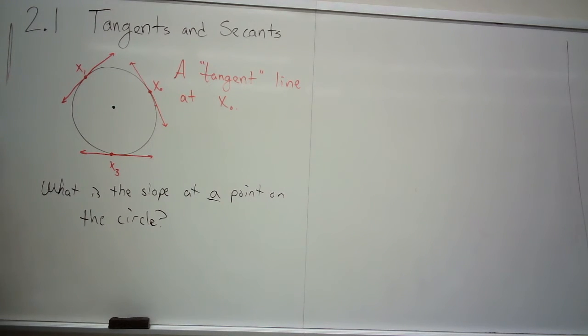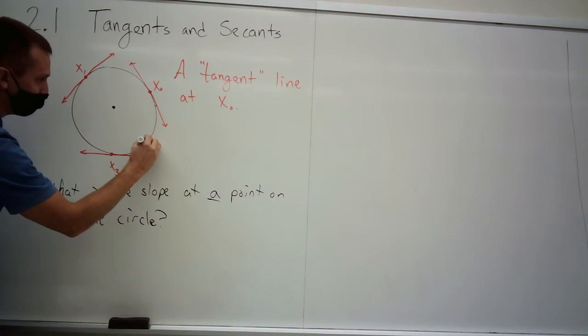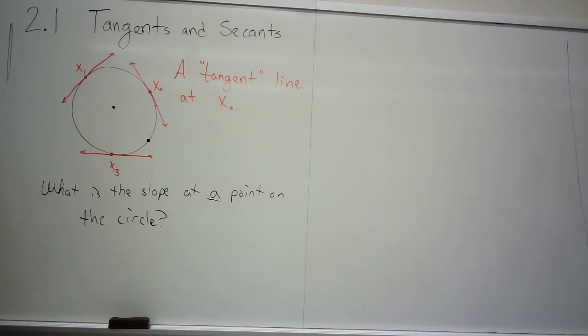If I asked you not a tangent question but a slope question, what is the slope at a point on the circle, maybe you'd throw up your hands and say I can't do it. Why can't you do it with just one point? You need two points to determine the line. Historically, how have you calculated slope? y2 minus y1 divided by x2 minus x1. You need two points. But if I said, here's one point on the circle, compute the slope there, intuitively you know it's a positive number and it's constant. But how do you go about doing that? That's the tangent problem.